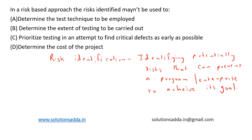The task of risk identification includes determining the best test technique to employ, determining the extent of testing to be carried out, and prioritizing testing in an attempt to find defects as early as possible. These three options are actually the objectives of a risk-based approach.